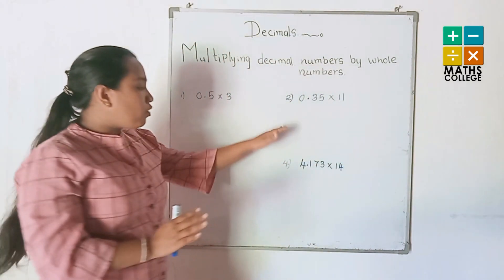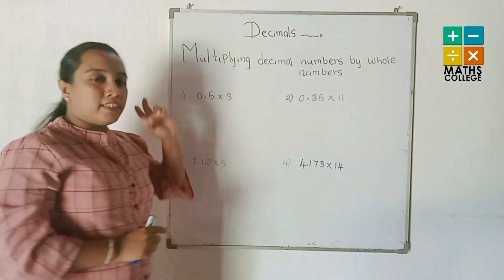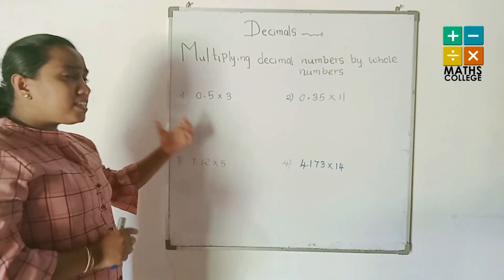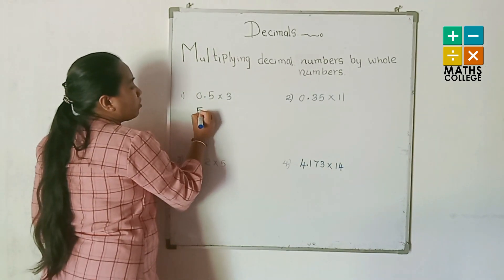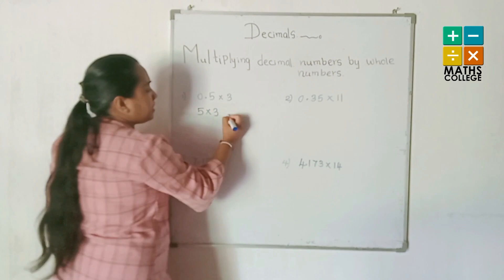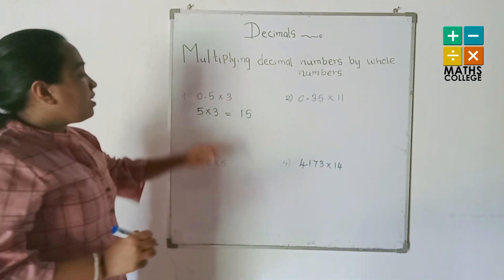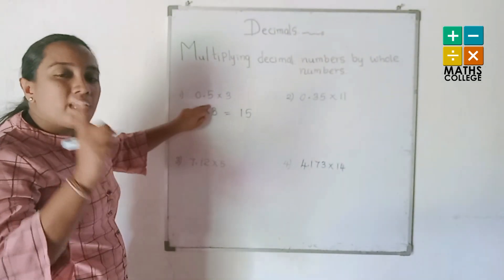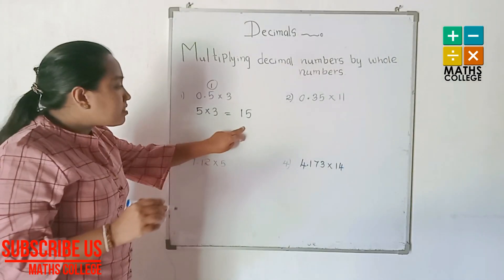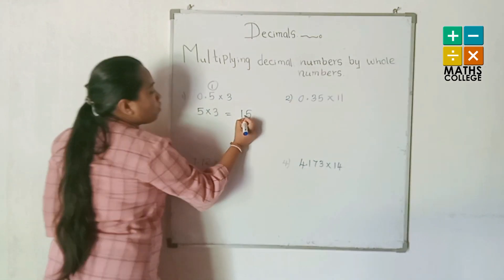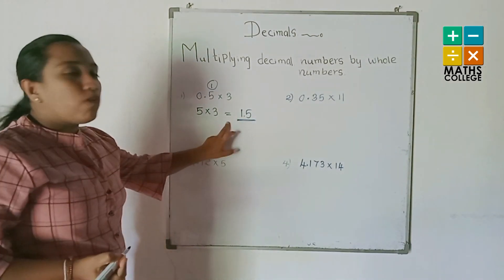Now look at how to multiply a decimal number by a whole number. First example: 0.5 multiplied by 3. Consider the number without the decimal — think of it as 5. Five multiplied by 3 equals 15. Now put the decimal point: 0.5 has one decimal place, so the answer also has one decimal place. Counting from the right-hand side, one place — the answer is 1.5.